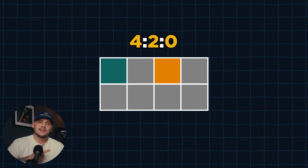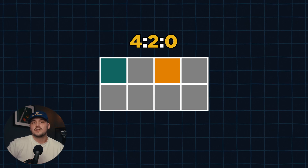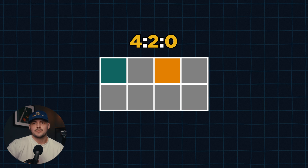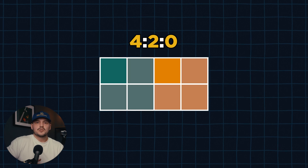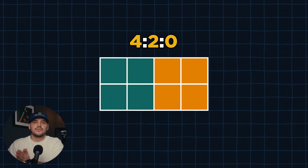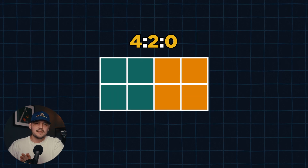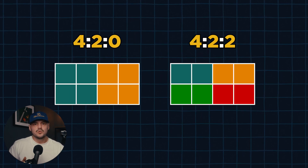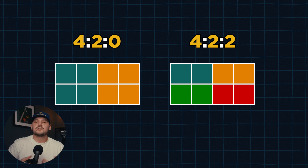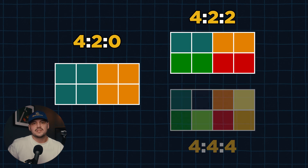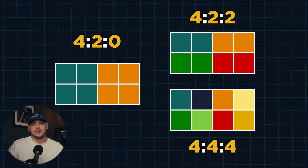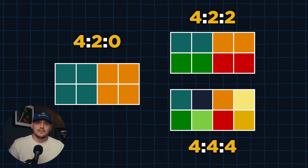Now if we instead were to shoot in 4:2:0 for example, this would mean that we would be capturing 2 colored pixels for the top row and 0 colored pixels for the bottom row, which would result in 50% less color data than 4:2:2, or only 25% of the full color data which is 4:4:4.